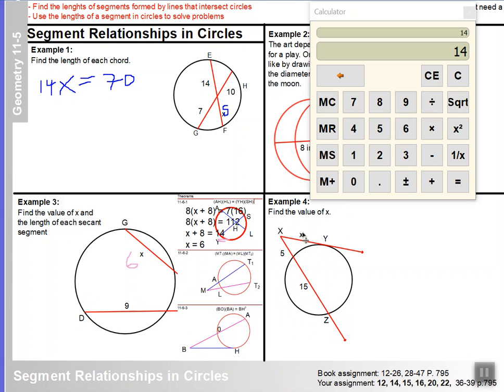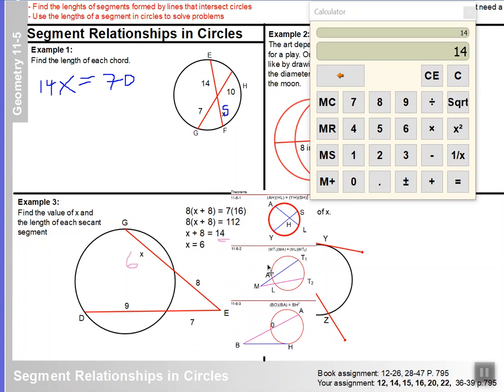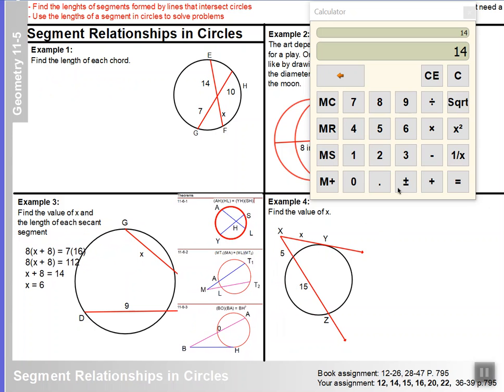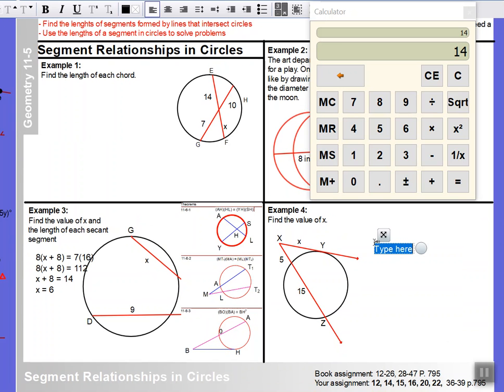All right. The last example we want to talk about. Oh, shocking. It's a tangent. So, we know that x squared is going to be equal to 20, the distance, the entire distance of that secant, times the part that's on the exterior 5. Well, I know that 20 times 5 is 100. So, that means that x squared is equal to 100. And the nice convenient thing about that is 100 is a perfect square. And so, x is equal to 10.